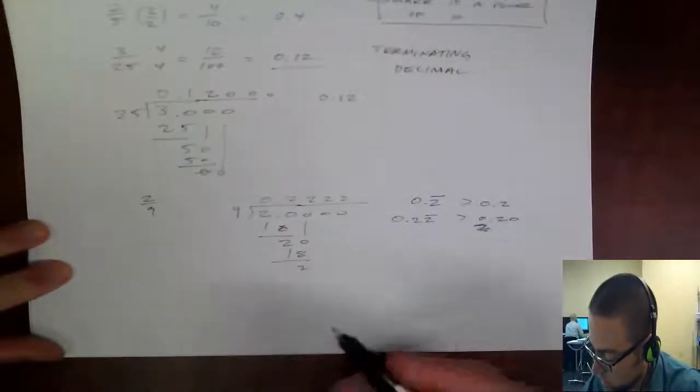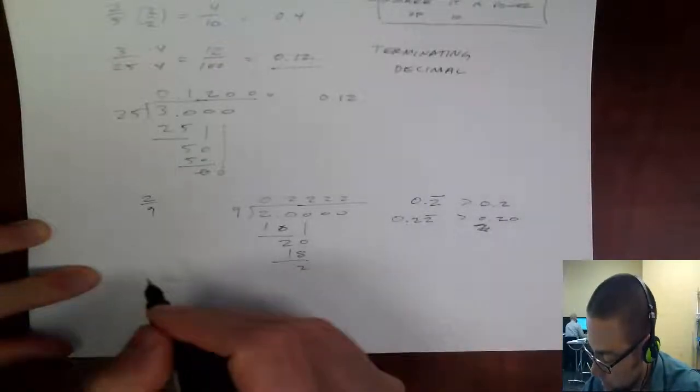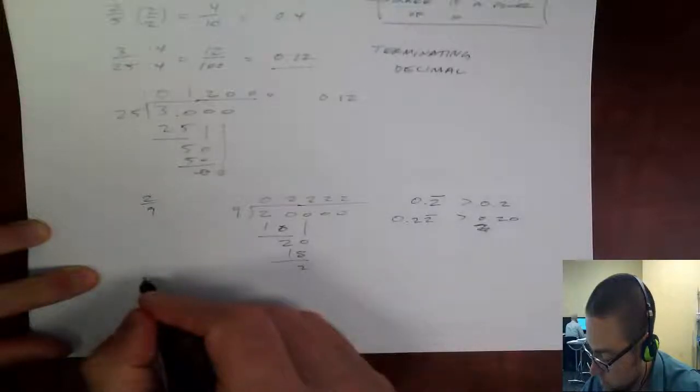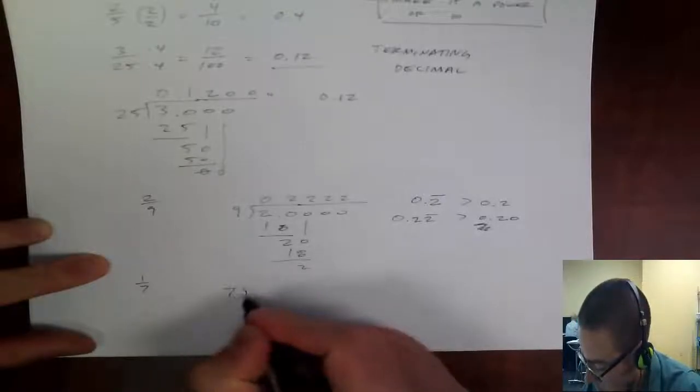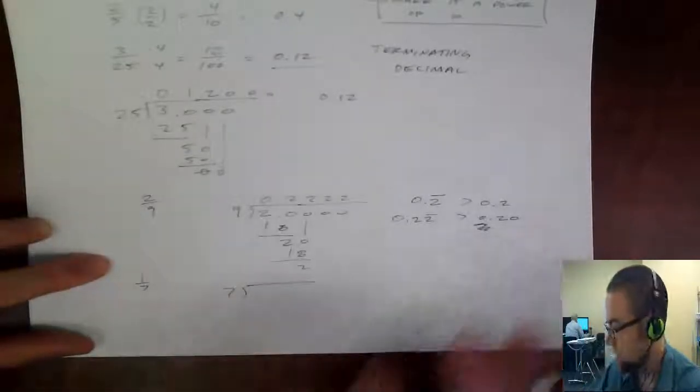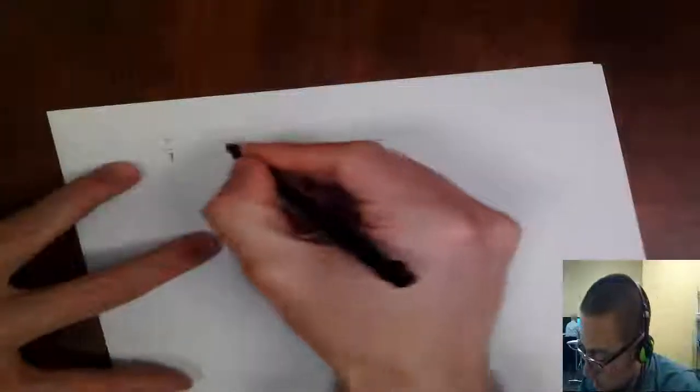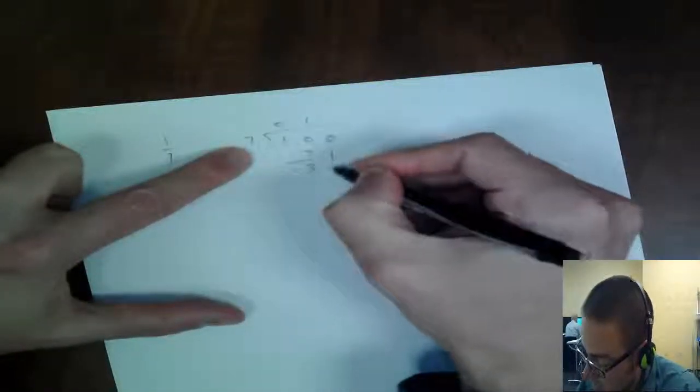Okay, so let me try just one more that it's repeating. How about 1 7th? Okay, so 1 7th is, actually I think I'm going to need more paper for this because it kind of takes a while for it to repeat. I'm going to go 1 7th, and 7 goes into 1, 0 times, and 7 goes into 10, 1 time, so it's 7, 3, bring it down to 0.